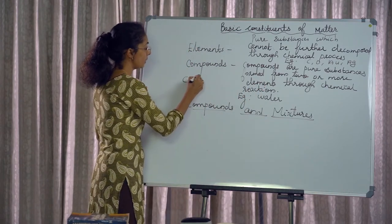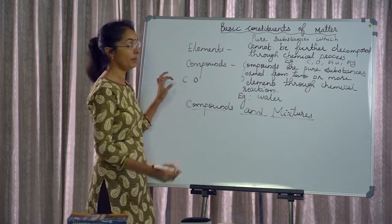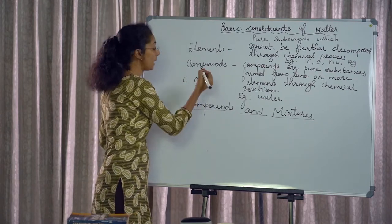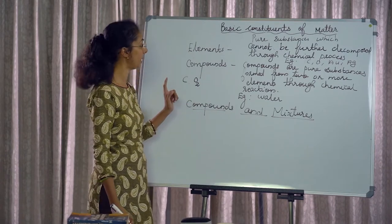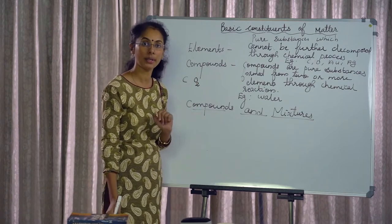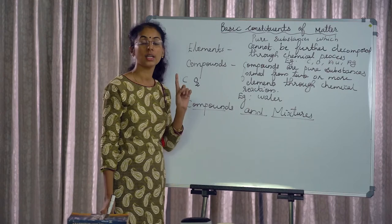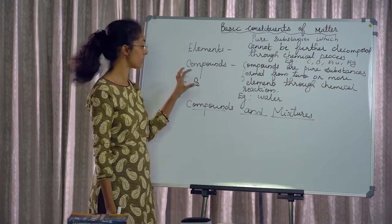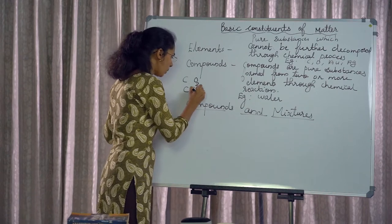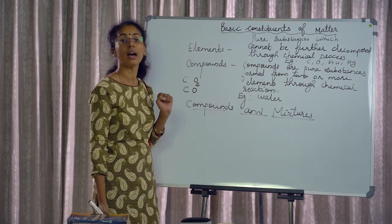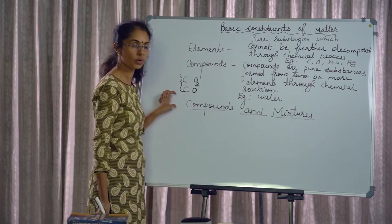For example, carbon and oxygen combine — one carbon with two oxygens forms carbon dioxide. One carbon with one oxygen forms carbon monoxide. These are different compounds: carbon dioxide and carbon monoxide.